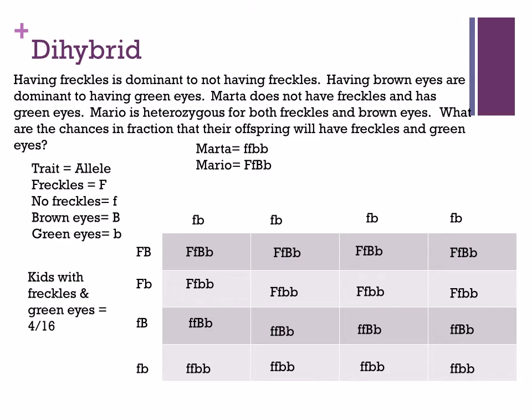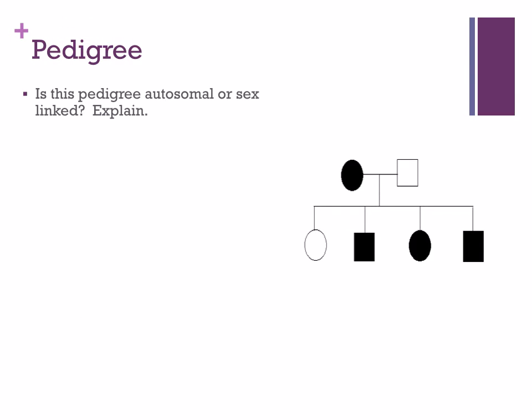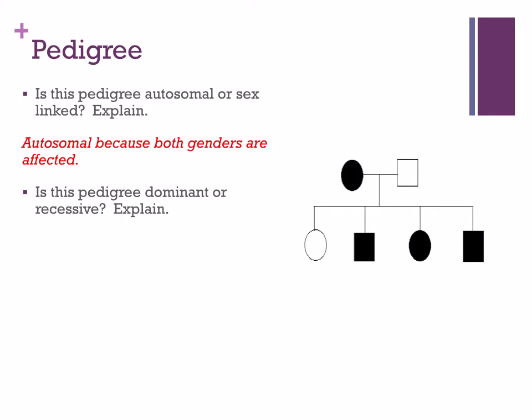The next thing is the pedigree. Is this autosomal or sex-linked? It's autosomal because both genders are affected — I see two shaded circles (women) and two shaded boxes (men). Since both are affected, we don't need X's and Y's because it has nothing to do with sex chromosomes. Is this dominant or recessive? The two sons and the daughter that are affected have an affected parent — the mother is affected — so since affected kids have an affected parent, it's dominant.